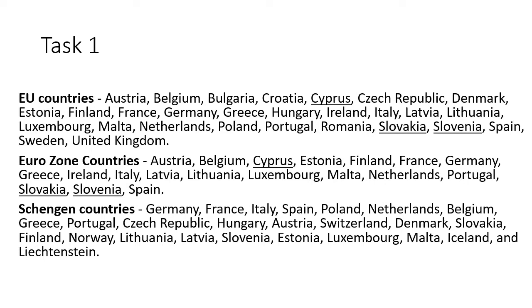There are currently 28 countries in the European Union — that's what EU stands for. The United Kingdom, as you're aware, has voted to leave and may be leaving in January 2021, but as yet we do not know that. So you've got to label all the EU countries. The Eurozone countries are all the countries that have the Euro as a currency — you'll notice that when you travel to France, Germany, or Greece, you use a Euro in that country.